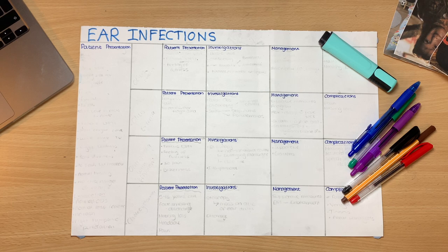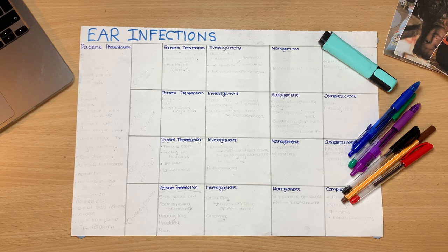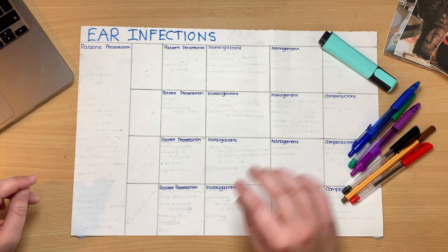You're in a GP practice and you have a parent on the end of the phone worried about their child. Their child's been ignoring the parent recently and seemed grumpy and does not settle as well as they're used to. They keep playing with their ear and nothing seems to stop their sniffly nose. They suspect this may be an ear infection and she asks the parent to bring their child in. Whilst you wait for them to get to the surgery, you scribble a few differentials. So let's think about what this could be.